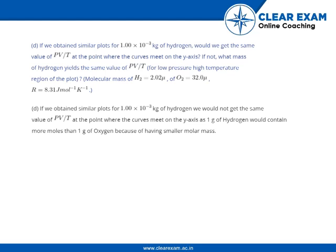The next question: if we obtain similar plots for 1 times 10 to the power minus 3 kg of hydrogen, would we get the same value of PV by T at the points where the curve meets the y-axis? If not, what mass of hydrogen yields the same value of PV by T for low pressure, high temperature region of the plot?